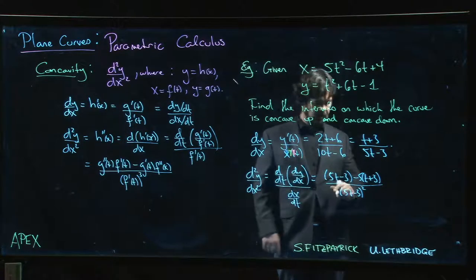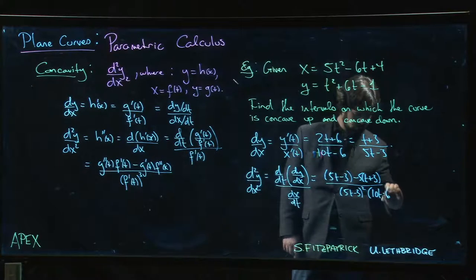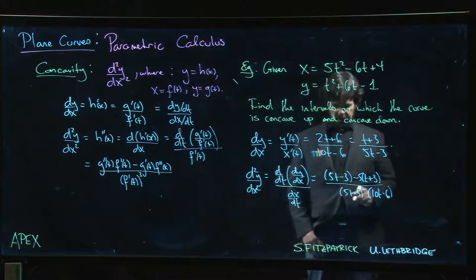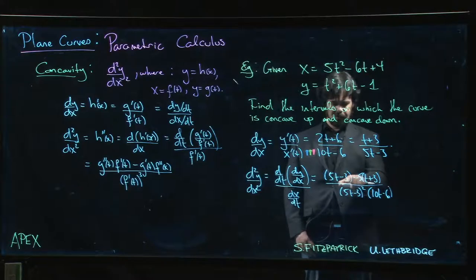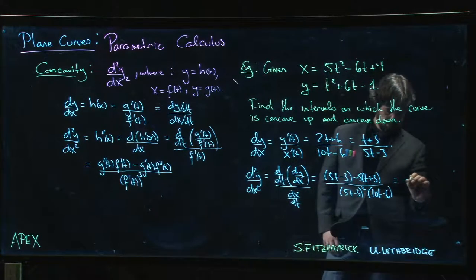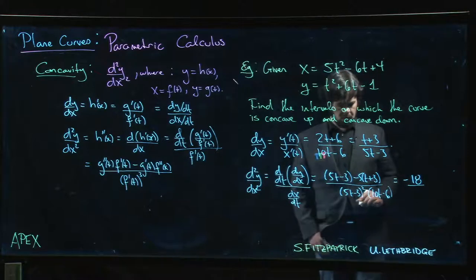And then we also have to divide by dx/dt again. Be careful, dx/dt is not 5t minus 3, it's 10t minus 6. Okay, so let's clean that up and see what we get.